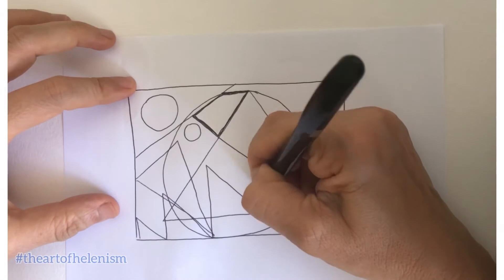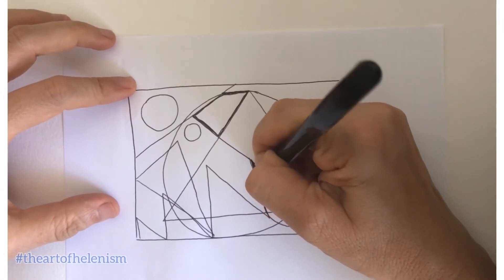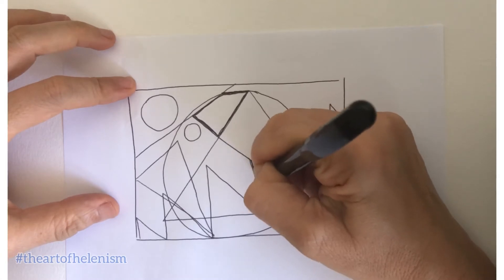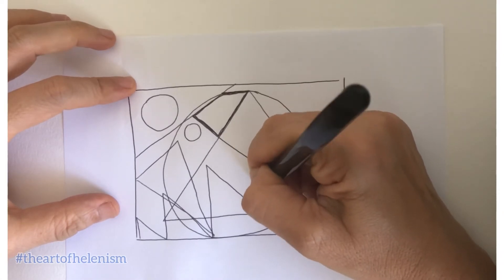Now, if you are happy with your darken lines, find another shape. If you need more time, just pause the video.